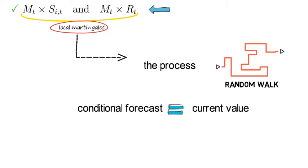Now mathematically, here's what it means. It means that the conditional expectation of MT times SIT, which we condition on little t, little t being smaller than cap T, that has to be equal to the current value, meaning to MT times SIT.